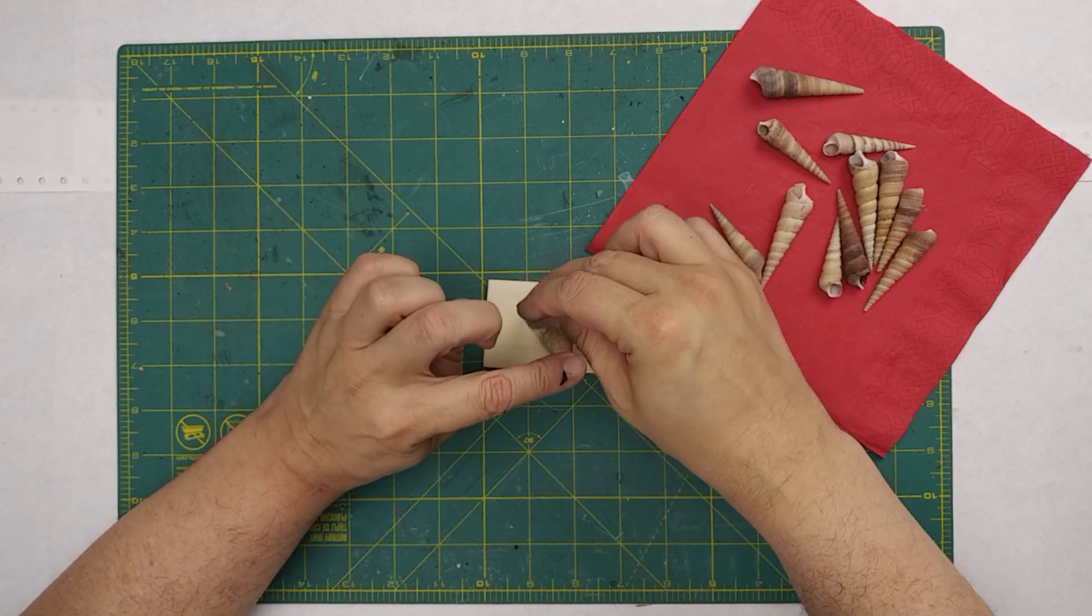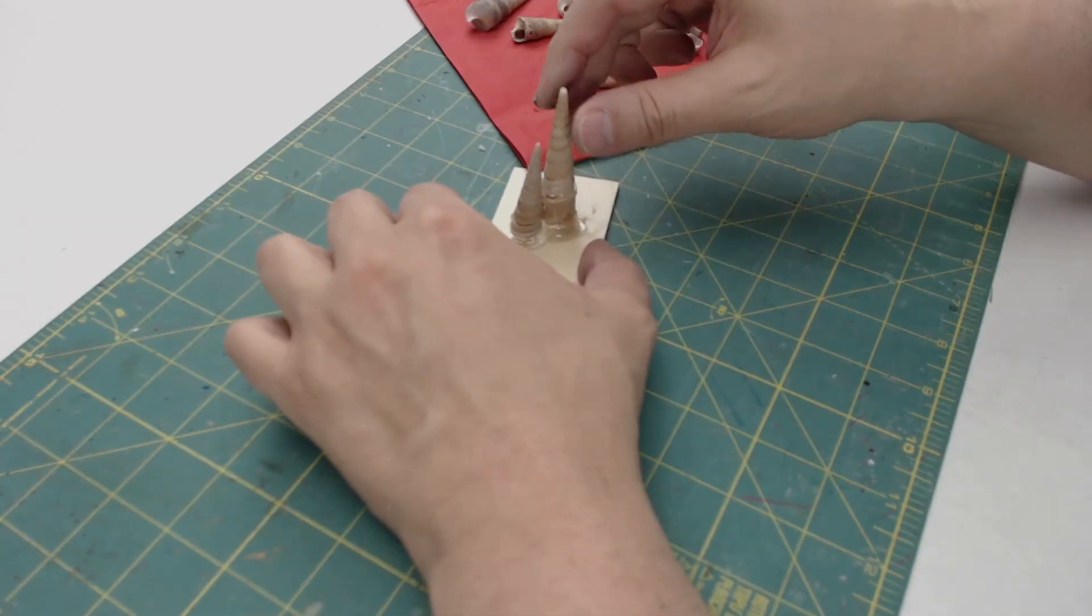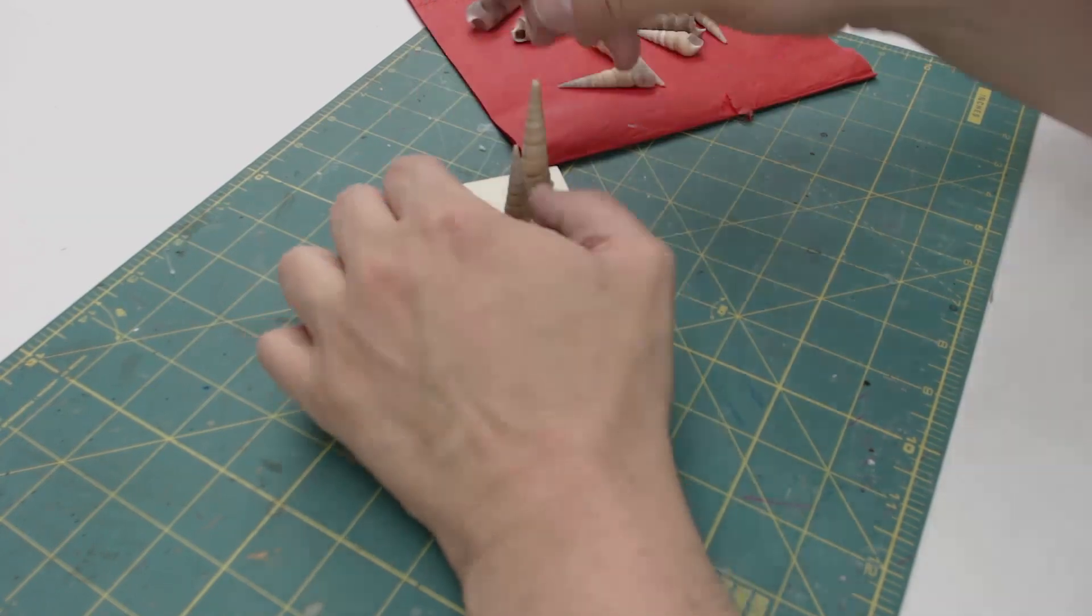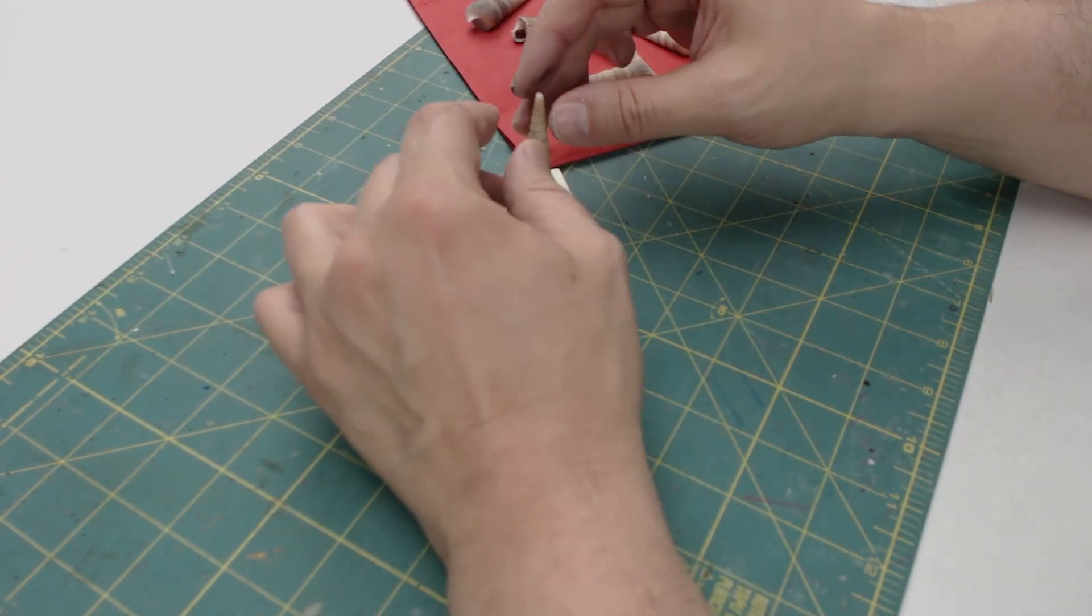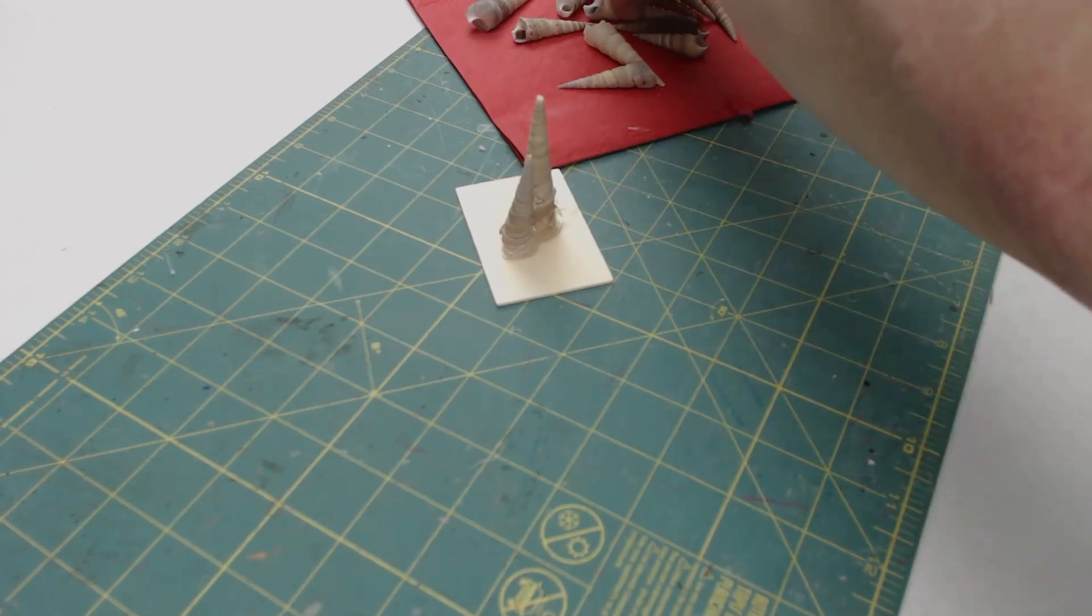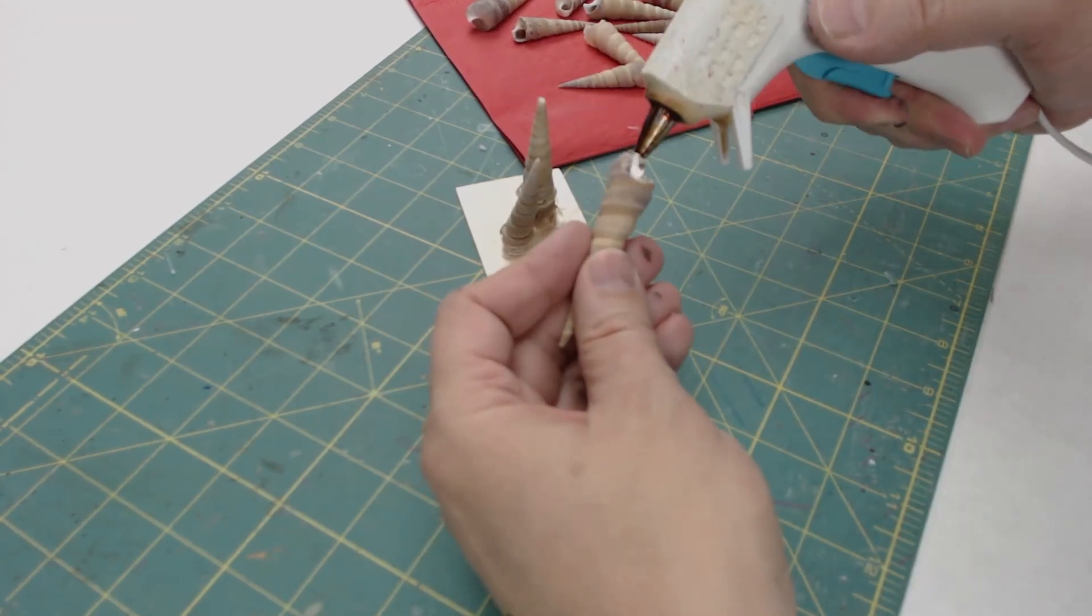You can save yourself some time by planning out your shell placement ahead of time. Don't forget that adding new shells to your build will actually melt the glue of any previously placed shells.